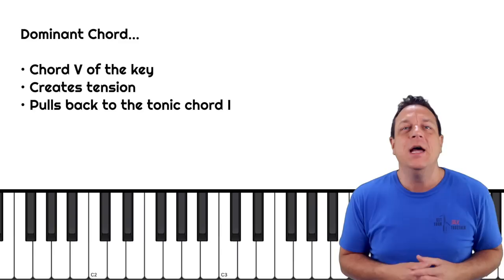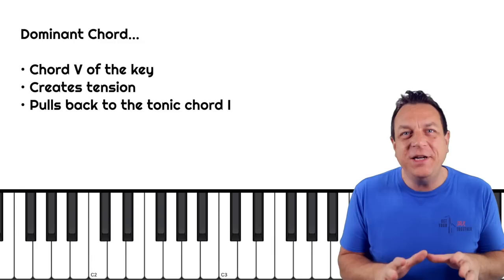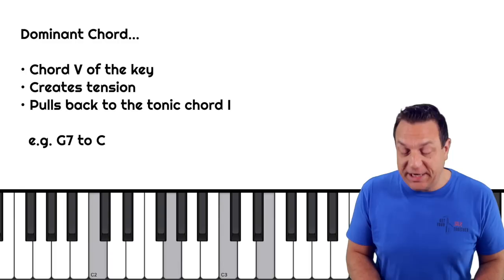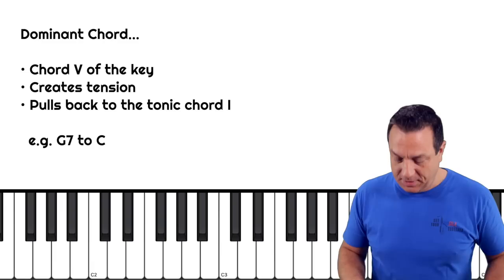If we're talking about secondary dominants, we better make sure we know what dominants are. In a nutshell, a dominant chord is a tension chord that pulls back to a tonic or home chord. The dominant is the chord built on the fifth scale degree of the key. For example, in the key of C, the dominant is G7 — that's one, two, three, four, five to G — so G7 is the dominant and it wants to pull back to C.